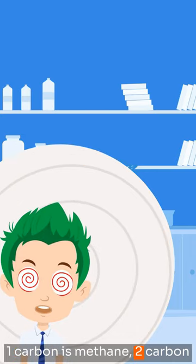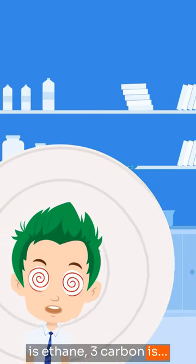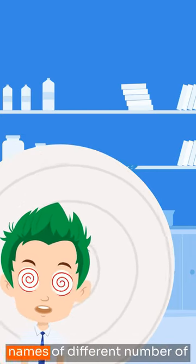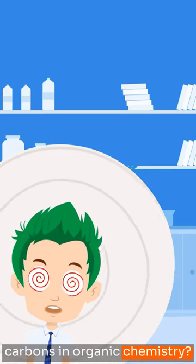1 carbon is methane, 2 carbon is ethane, 3 carbon is... I give up. How do I remember the names of different numbers of carbons in organic chemistry?